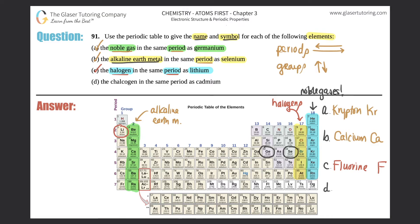Last one: the chalcogen in the same period as cadmium. Well, where's cadmium? Cadmium is number 48, it's all the way down here. And it's got to be in the same period, so period number five from here all the way to xenon, right?